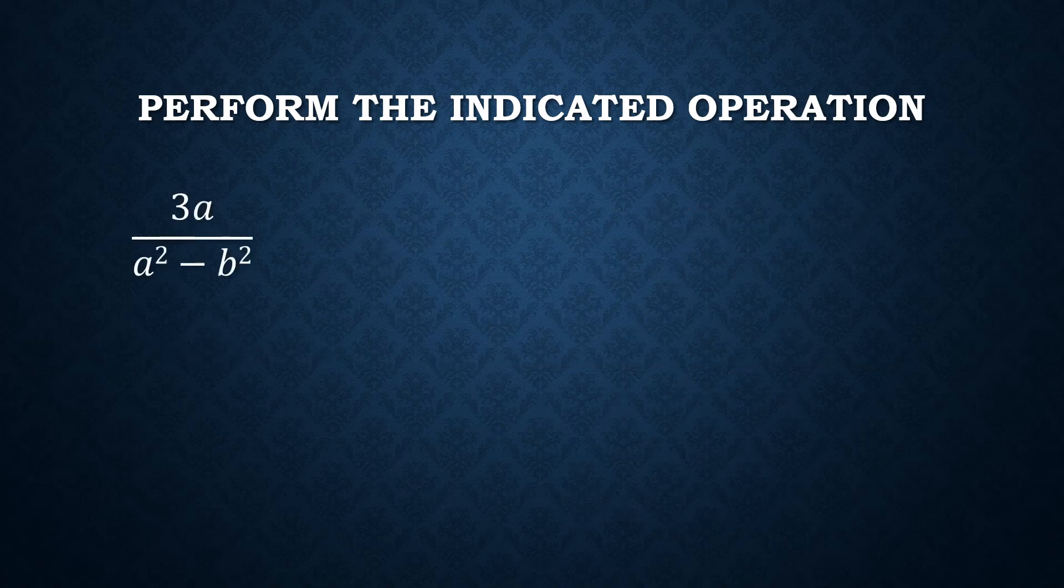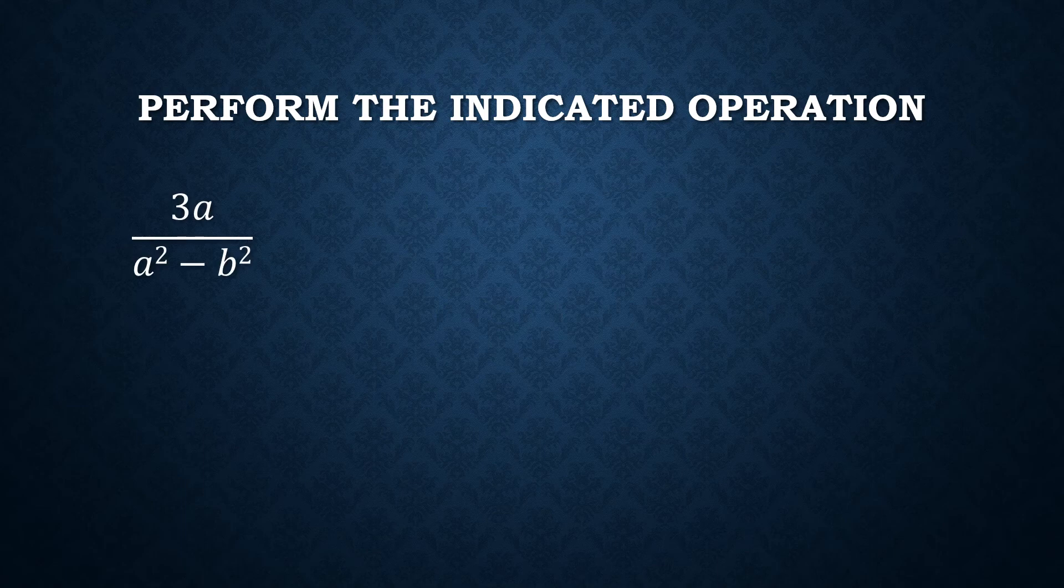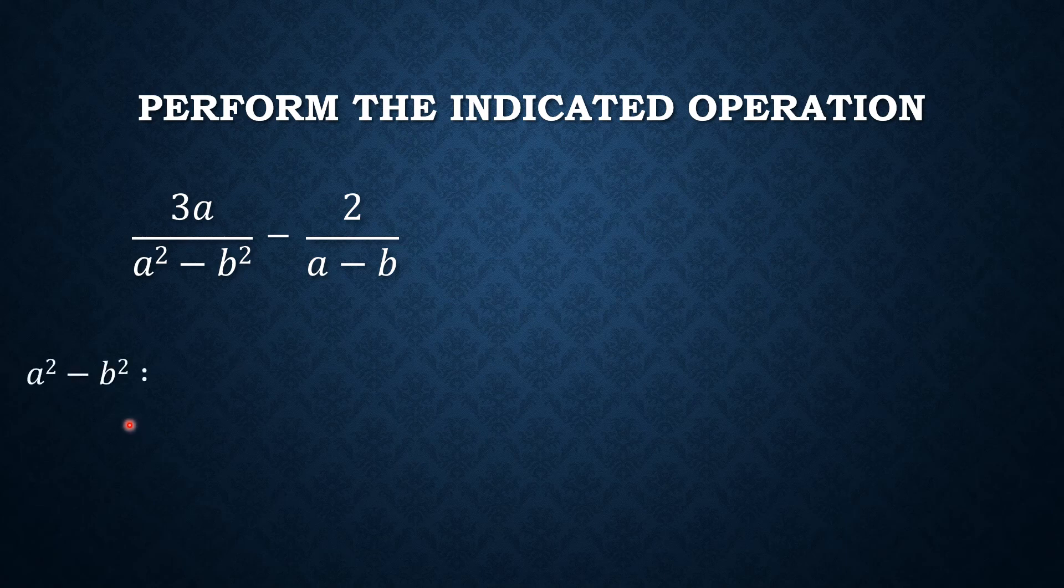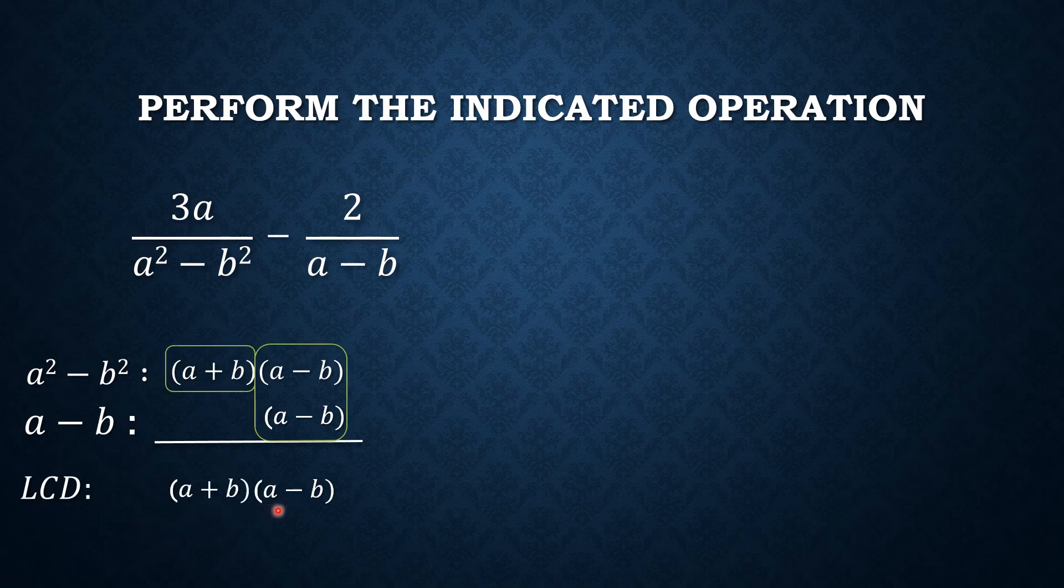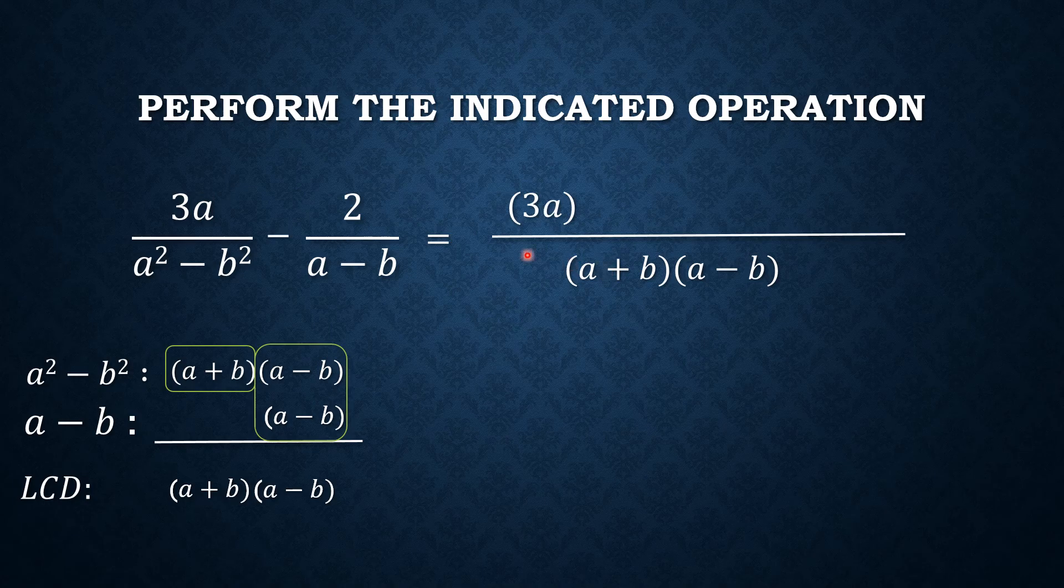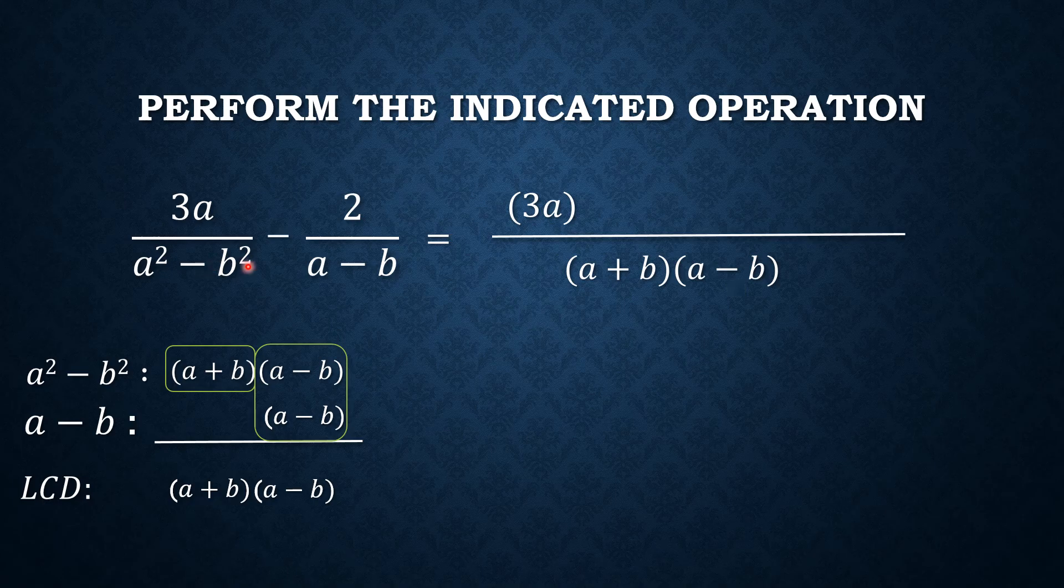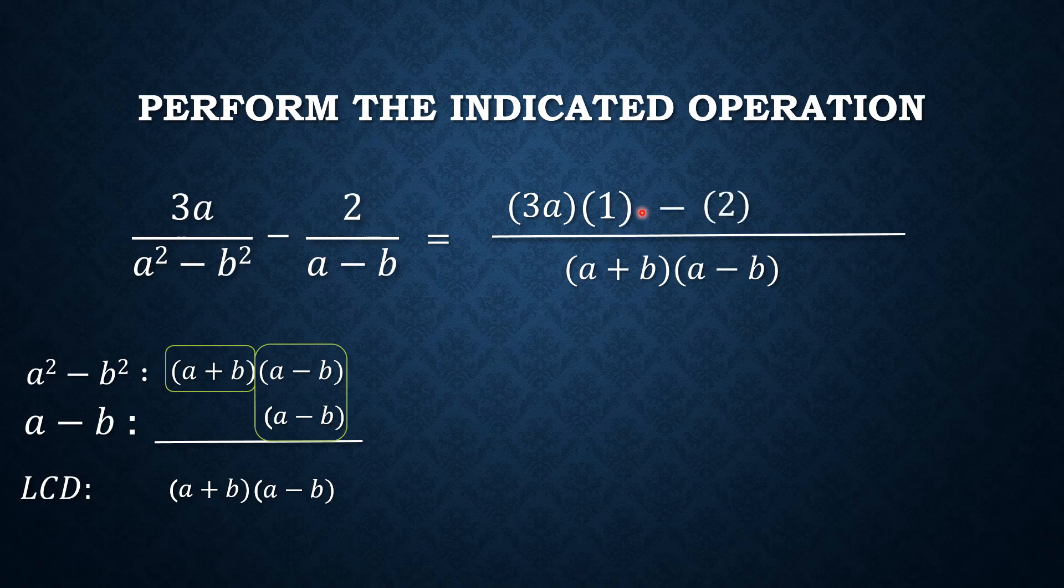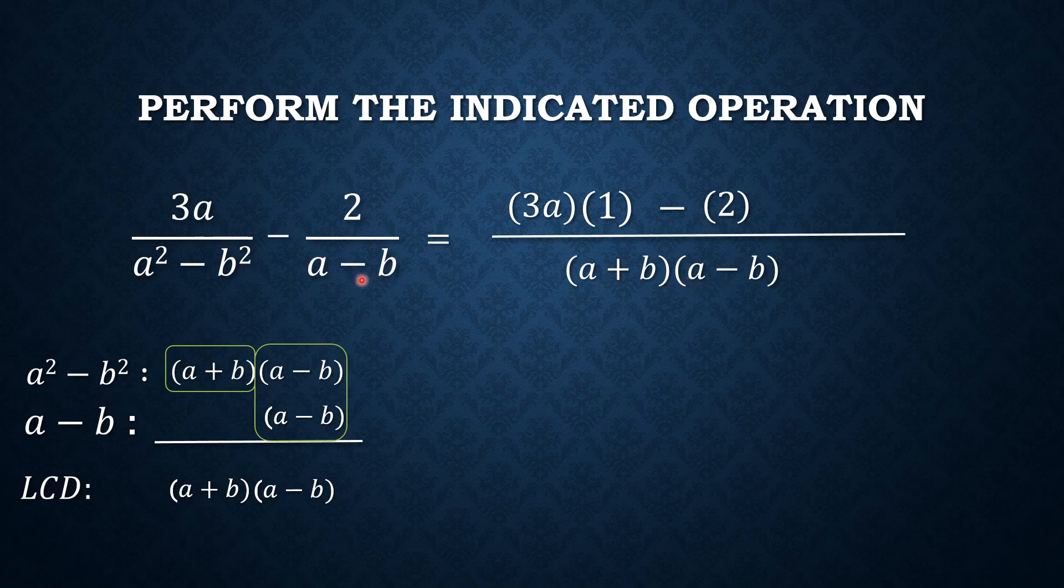For the last example, say we have 3a over a squared minus b squared minus 2 over a minus b. Finding their LCD, we have a plus b times a minus b or simply a squared minus b squared. Next, we have 3a times, notice that a plus b times a minus b divided by a squared minus b squared is 1, times 1 here and then minus 2 times a plus b times a minus b divided by a minus b. We still have a plus b.